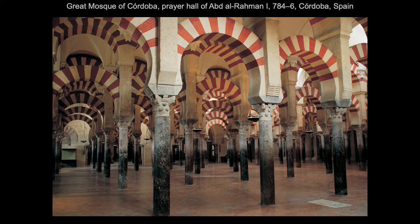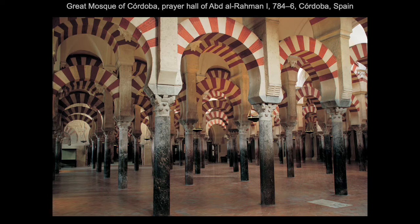The Great Mosque of Córdoba in Córdoba, Spain features a prayer hall where repetition creates a beautiful sense of rhythm. There are seemingly endless rows of identical columns and arches with alternating red and white voussoirs — upside-down trapezoidal shaped stones — alternating not only in color but also in material, as the white is stone while the red is made of brick, adding both visual rhythm and structural strength to the arches. Each element — the columns, the arches, the individual voussoirs — has its own simple rhythm that enhances the function of the space and becomes part of worship, pulling the viewer into a spiritual state and creating a space for prayer and contemplation.